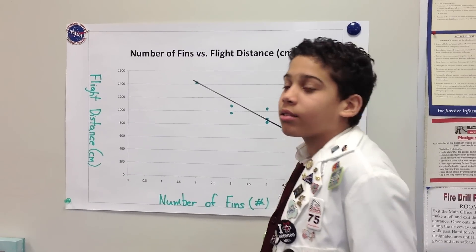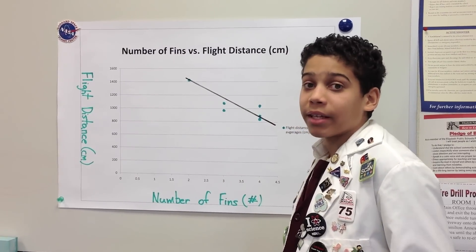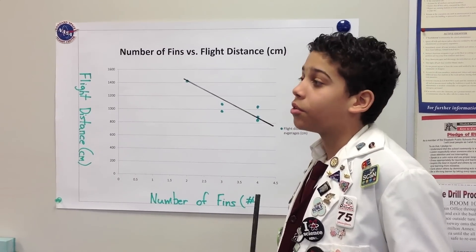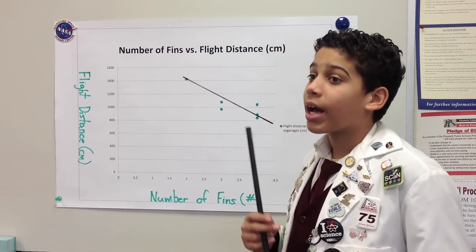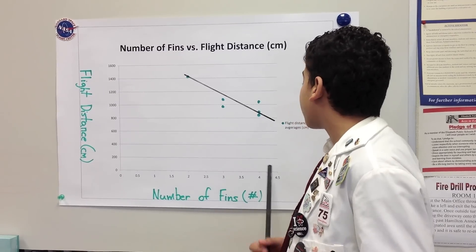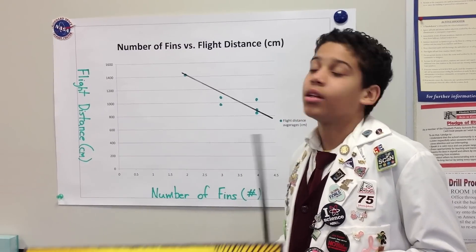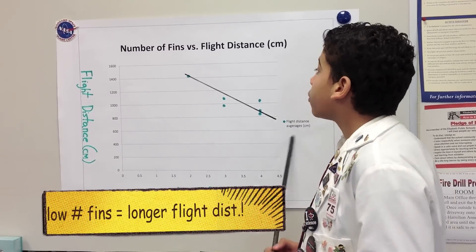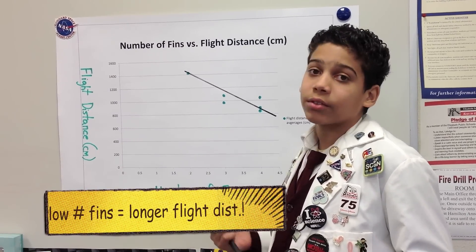In class, all the students were making rockets, and we used a different amount of fins. But when we added a lot of fins, we didn't make as much flight distance. But when we decreased the amount of fins, it started going farther.